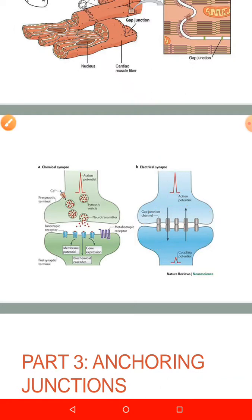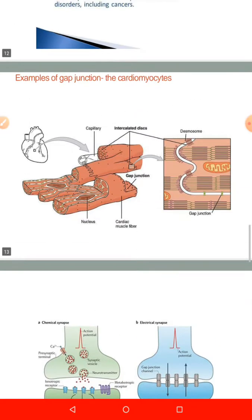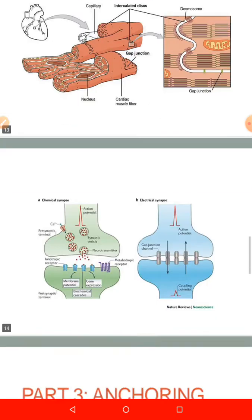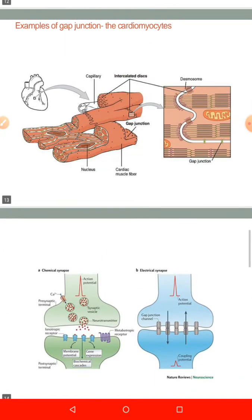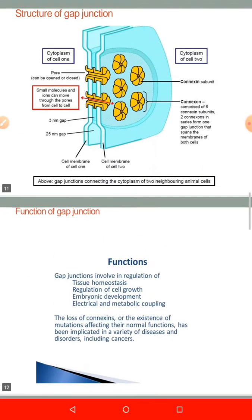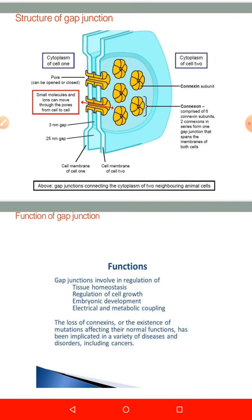In short, what we've said is that the communicating junctions allow or they permit the intracellular exchange of substances. And the gap junctions from molecular level, they are made up of a protein called connexin. And the group of connexins, they produce what we call connexons. So a connexon will have six connexins a unit.